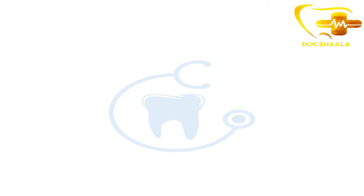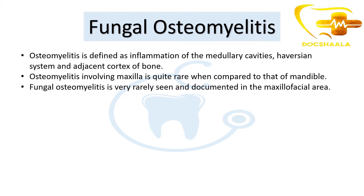So what is osteomyelitis? Osteomyelitis is defined as the inflammation of the medullary cavities, Haversian system, and the adjacent cortex of the bone. It normally involves long bones. It is rare — it rarely involves the maxilla compared to the mandible — and fungal osteomyelitis is also rarely seen and rarely documented in the maxillofacial area.